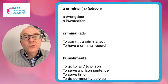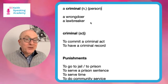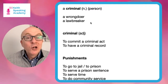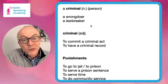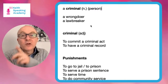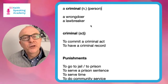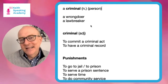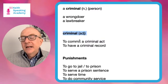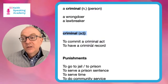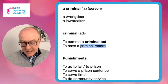We can also talk about a wrongdoer - somebody who does wrong - or a lawbreaker - somebody who breaks the law. Practice these: a criminal, a wrongdoer (stress on the first syllable), a lawbreaker. Notice that criminal can also be the adjective - the same word becomes the adjective, as in 'to commit a criminal act' or 'to have a criminal record.' A criminal act is any kind of bad lawbreaking. A criminal record means the police have your details in their database.